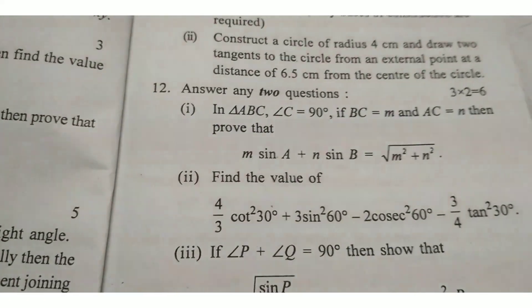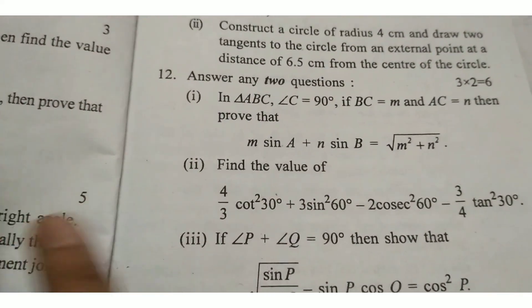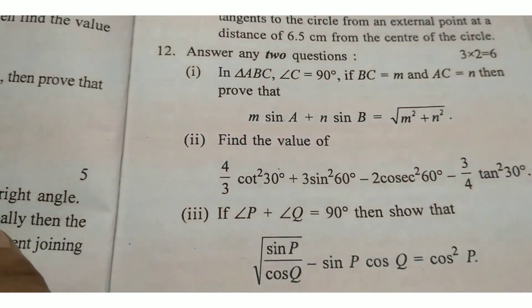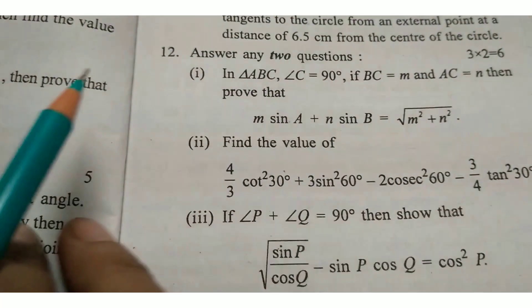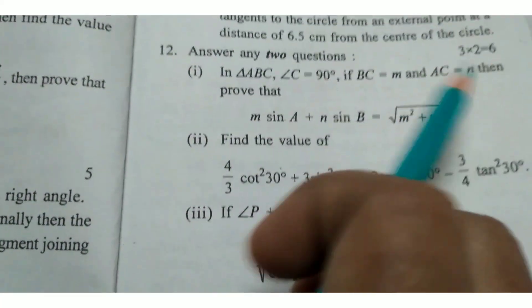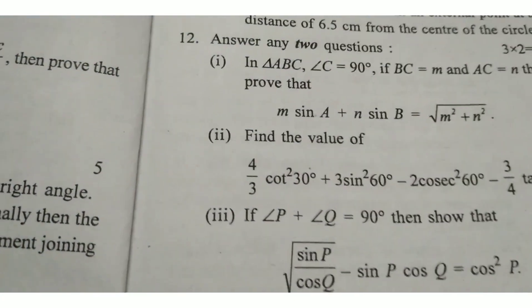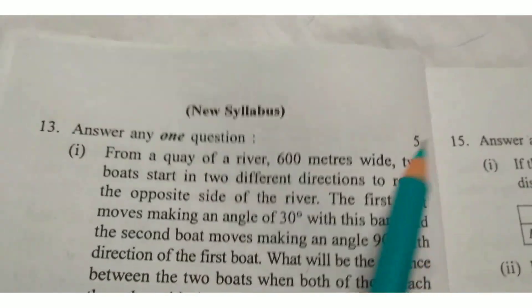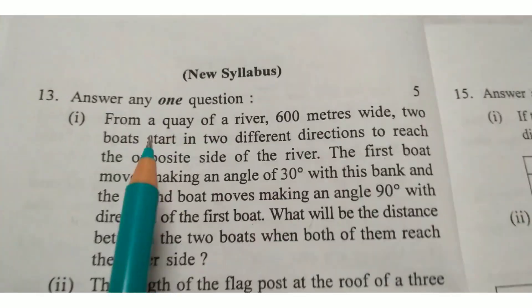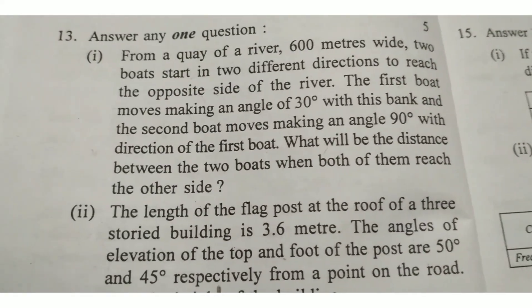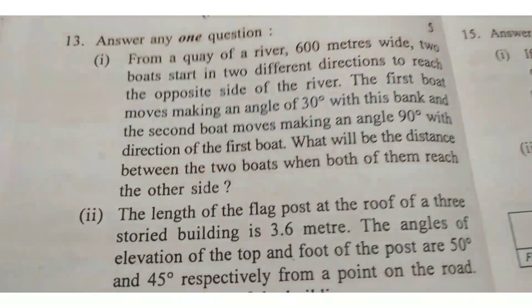Question numbers 12 and 13 come from Trigonometry. Question number 12: Answer any 2 questions — each question carries 3 marks, 3 into 2 equals 6 marks. Question number 13: Answer any 1 question, for 5 marks. Two questions come from Chapter 25 — Heights and Distances — answer any 1.